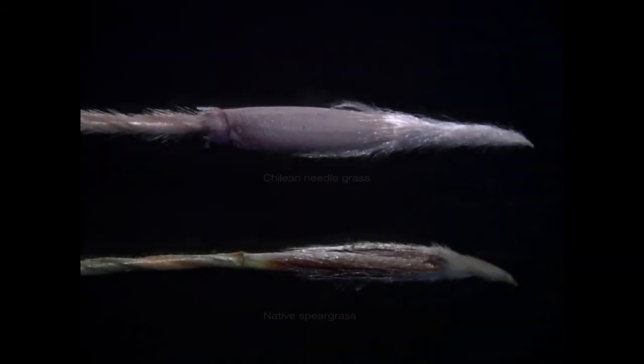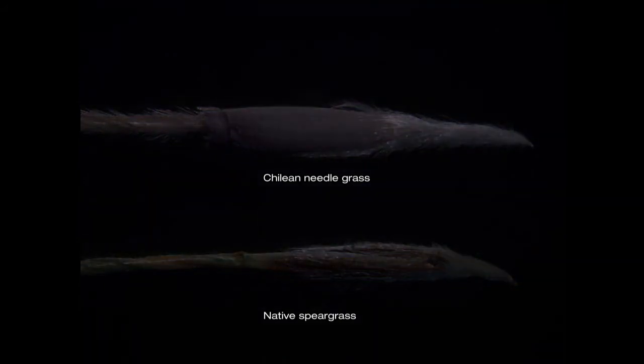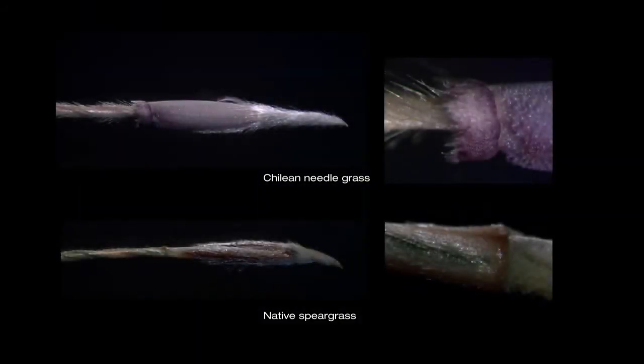We will now compare the CNG panicle seed to a typical Austrostipa, or native speargrass panicle seed, that is commonly mistaken for CNG. While they are similar in size and general form, notice that the native seed is darker in appearance, is much hairier, and lacks a corona. Panicle seed provides the best diagnostic characteristics for the identification of CNG.